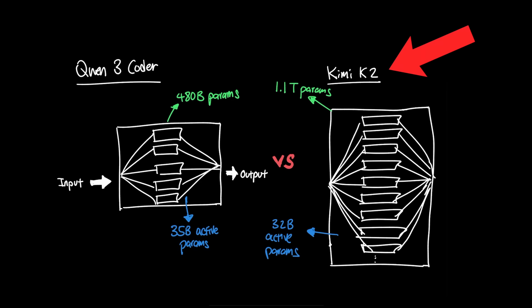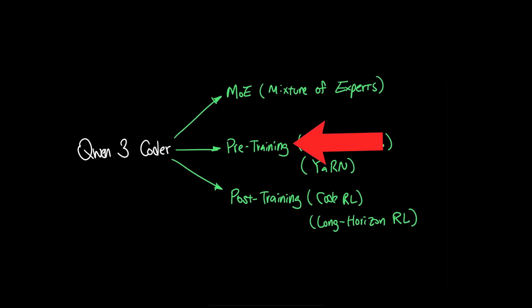And all that to say, although both KimiK2 and Quen3 Coder share Moe as their base architecture, their pre-training decisions look very different.